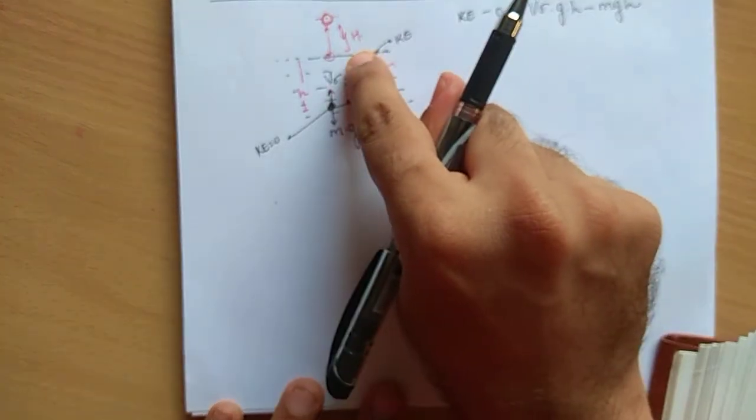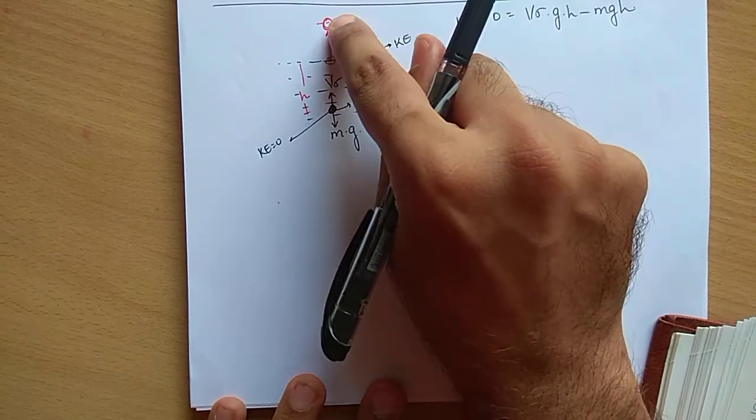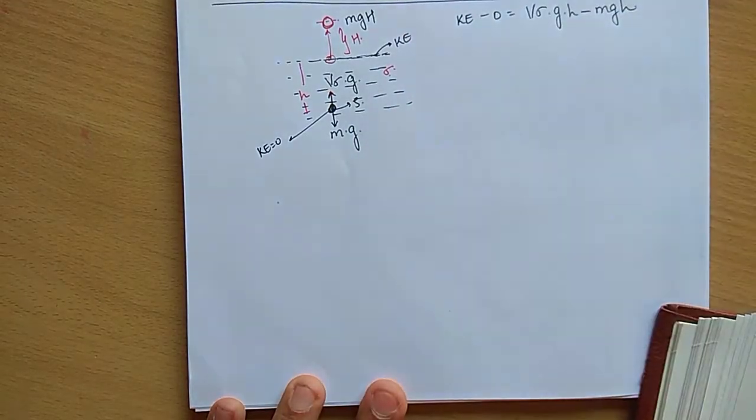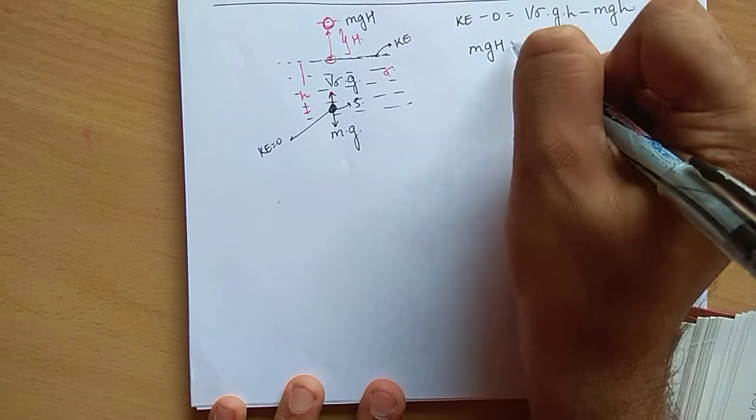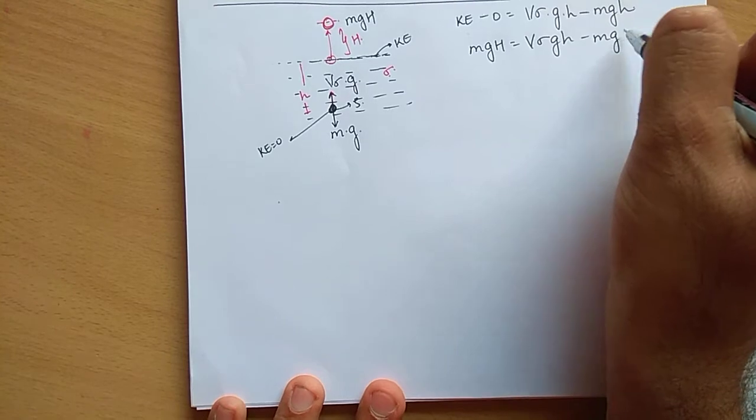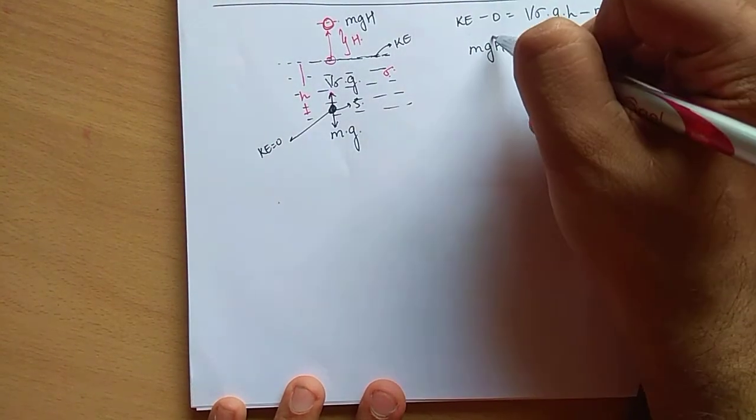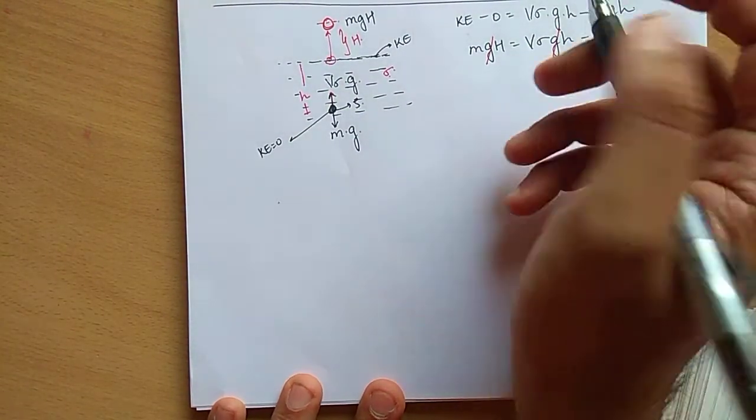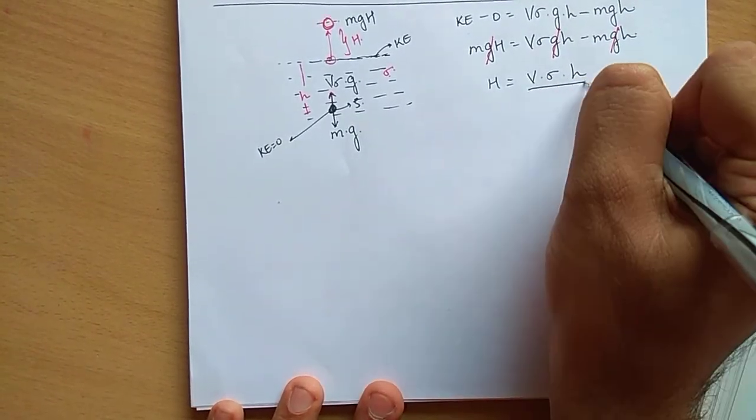Now yeh hi kinetic energy eventually potential energy mein convert ho jayegi. So yahan pe jitni bhi kinetic energy hogi, that will get converted into potential energy, that is mgh'. So this is equal to V sigma gh minus mgh.